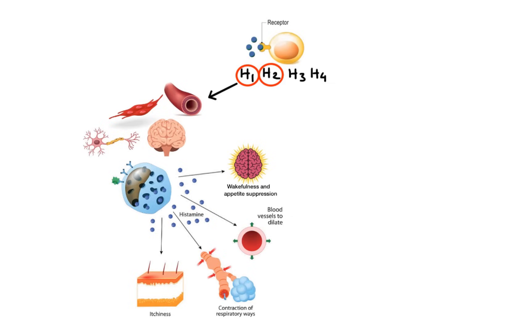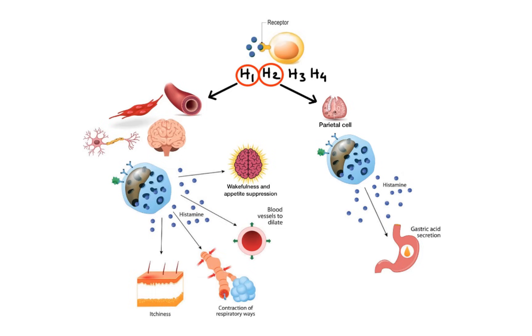H2 receptors are expressed mainly on gastric parietal cells. When histamine binds to these receptors, it causes increased gastric acid secretion.